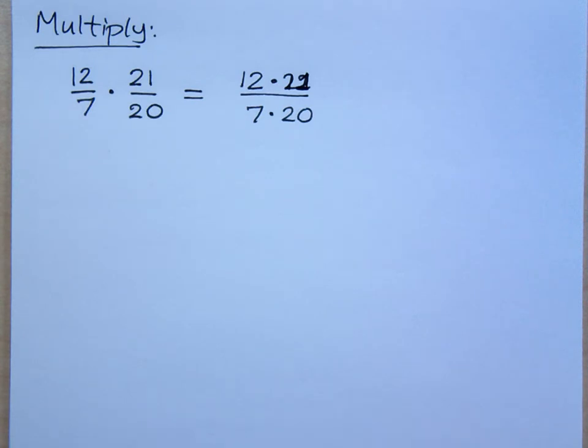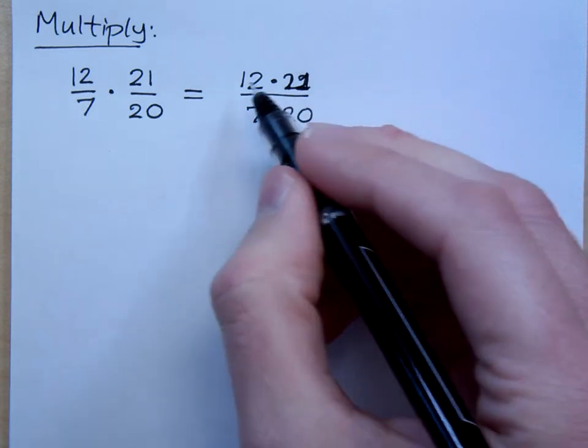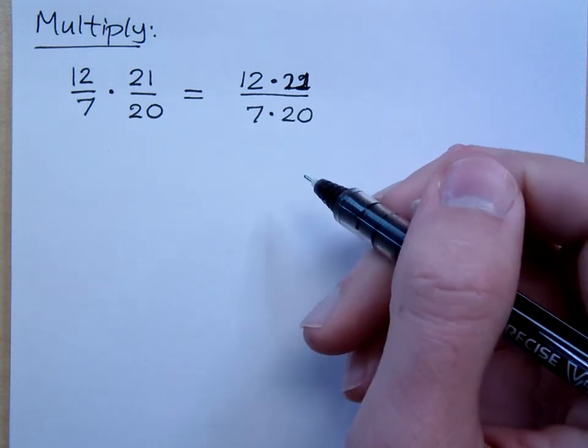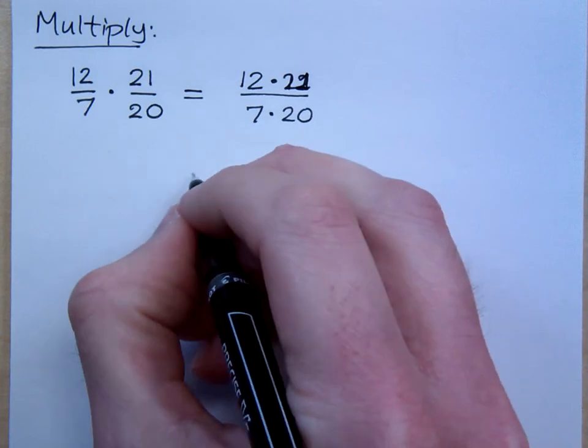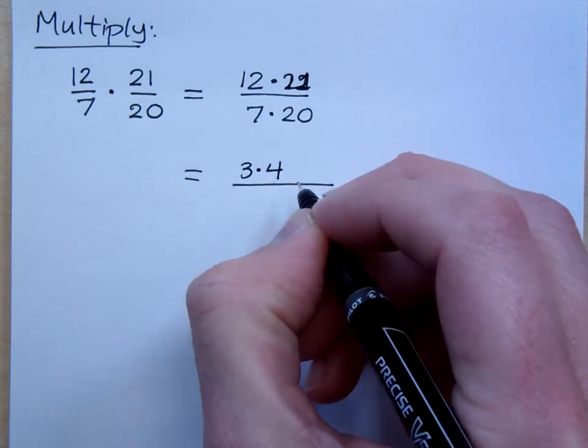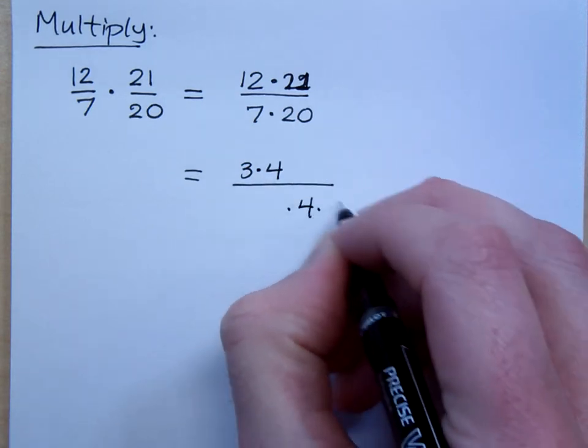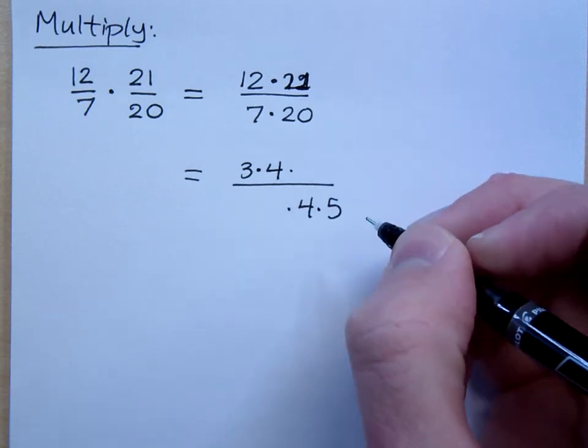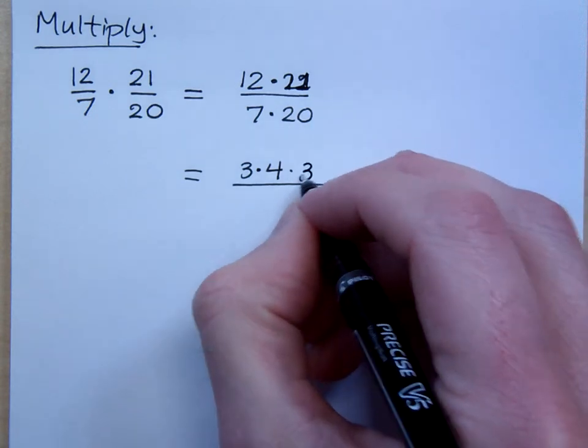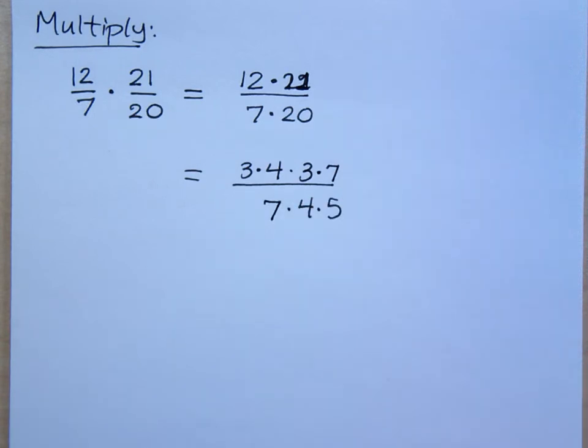A common factor has to be one in the numerator and one in the denominator. 12 and 20 have a common factor of 4. I'm going to rewrite that 12 to be 3 times 4, and the 20 is going to be 4 times 5. The 21 is 3 times 7, and of course 7 is just 7. You don't have to do it exactly this way. There are a lot of different ways for us to show our work. But then I reduce.